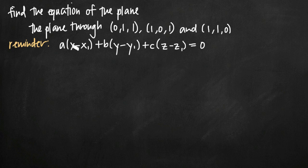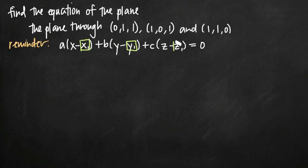I've gone ahead and written the equation of the plane — the formula for the equation of the plane here. Even though we're going to be using vectors to find the equation of this plane, this formula should look fairly familiar. We have x minus x₁, y minus y₁, and z minus z₁. We take one point on the plane and plug it in for x₁, y₁, and z₁, leaving x, y, and z in the equation. a, b, and c are the slopes in the x-, y-, and z-directions respectively.